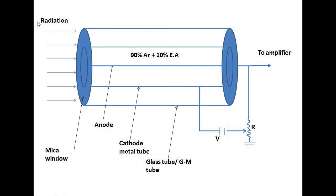When high energy particles enter into the tube, it ionizes one or more argon gas atoms. The electrons are attracted towards the anode and positive ions towards the cathode. After ionization, a current pulse passes in the circuit and produces a voltage pulse. An electronic pulse amplifier amplifies this voltage pulse to a value between 5 to 50 volts. This pulse is again applied to a counter and the number of incoming radiations can be counted.